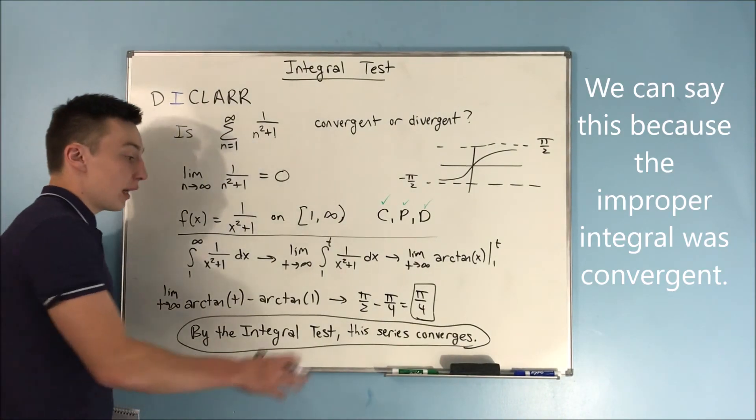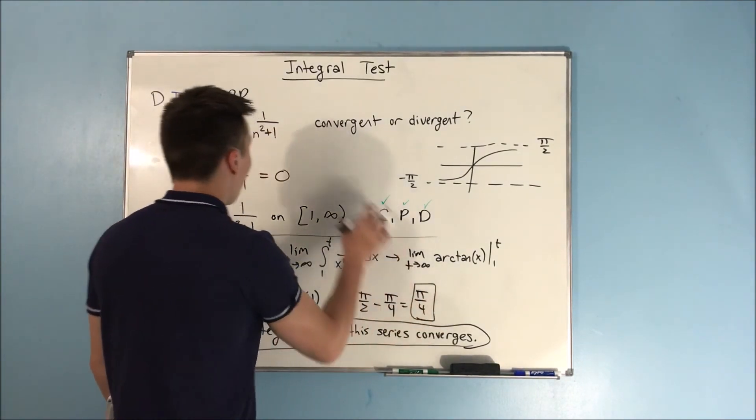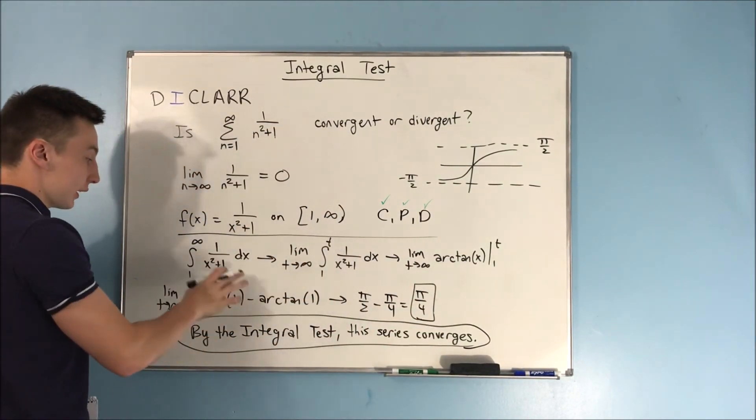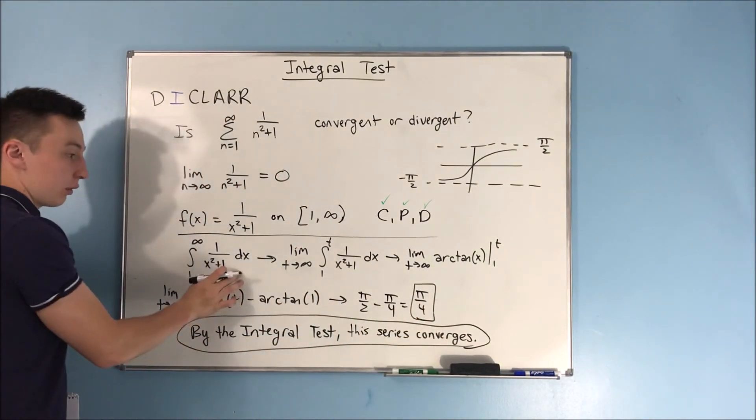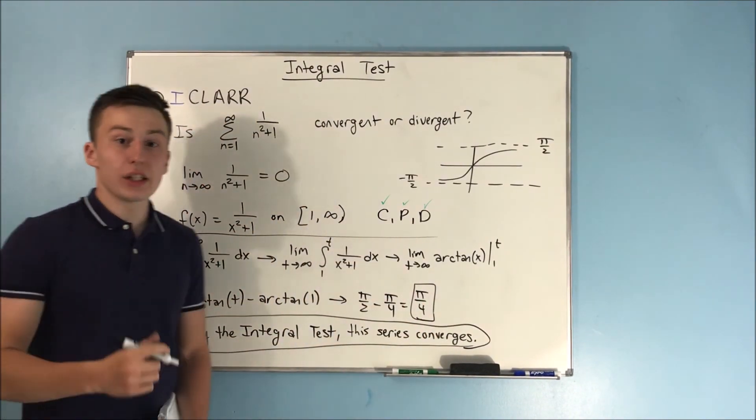We can say that by the integral test, this series converges. One important thing to note: π/4 is not the sum of our series — that's just the evaluation of the integral, not necessarily the sum of the series. That's going to do it for this video. If this video helped you, make sure to leave a like and subscribe. You can also view the playlist for sequences and series. If you'd like to support me, I have my Patreon linked in the description, along with some other cool links. See you soon.